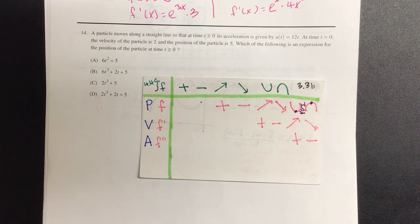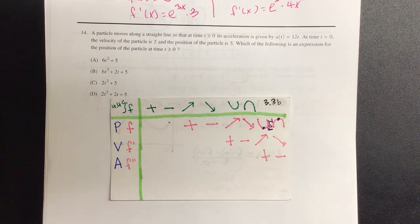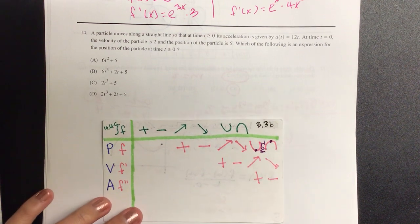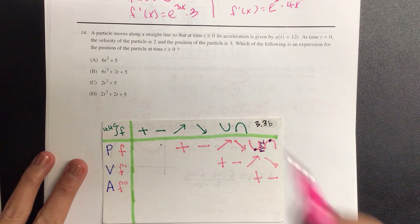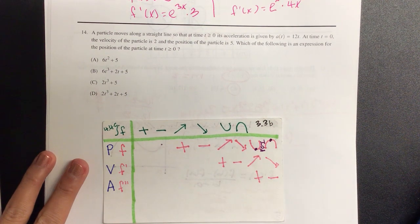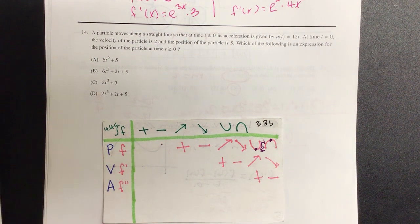The particle moves along a straight line so that at time t is greater than or equal to zero, its acceleration is given by a of t equals 12t. At time t equals zero, the velocity of the particle is two and the position of the particle is five. Which of the following is an expression for the position of the particle at time t is greater than or equal to zero?